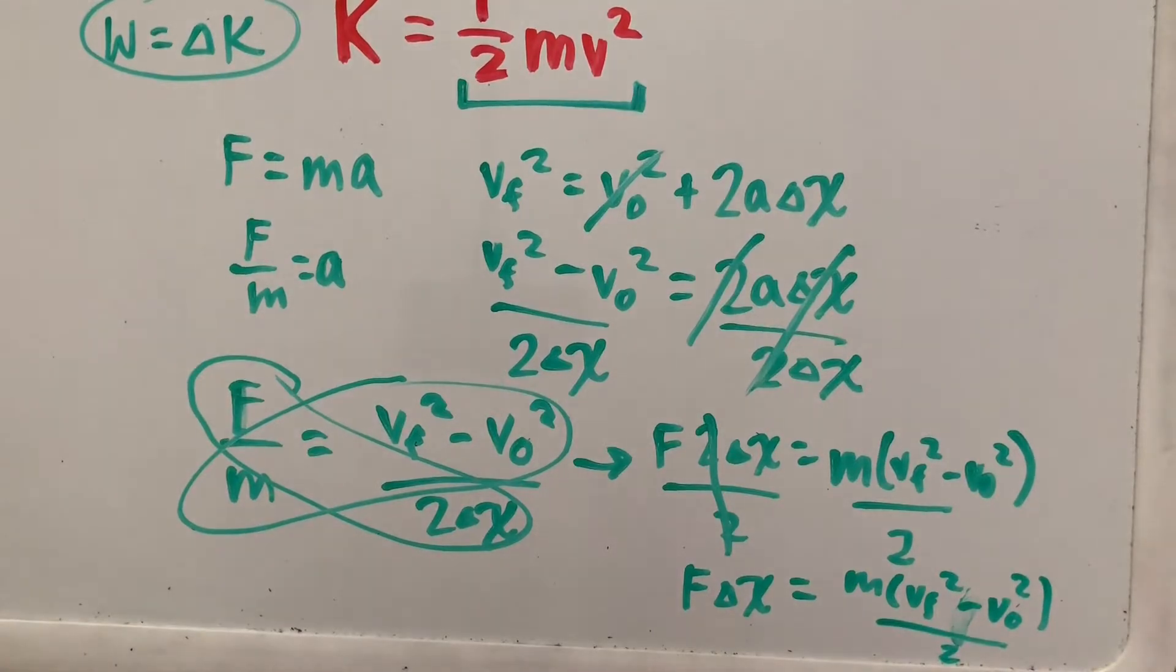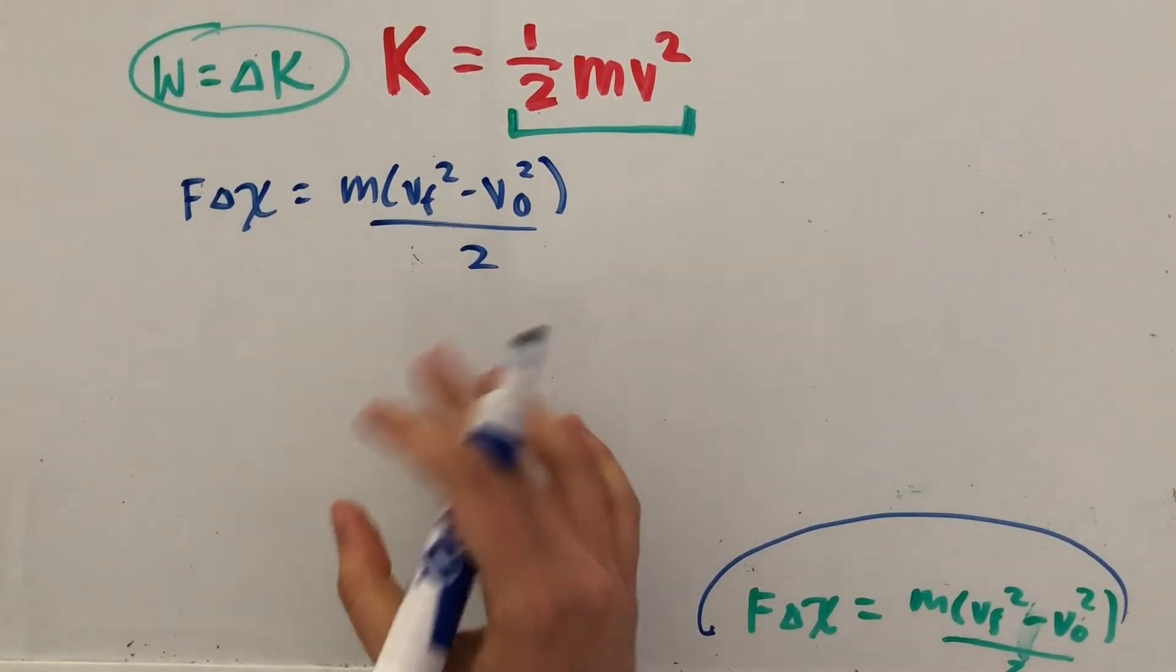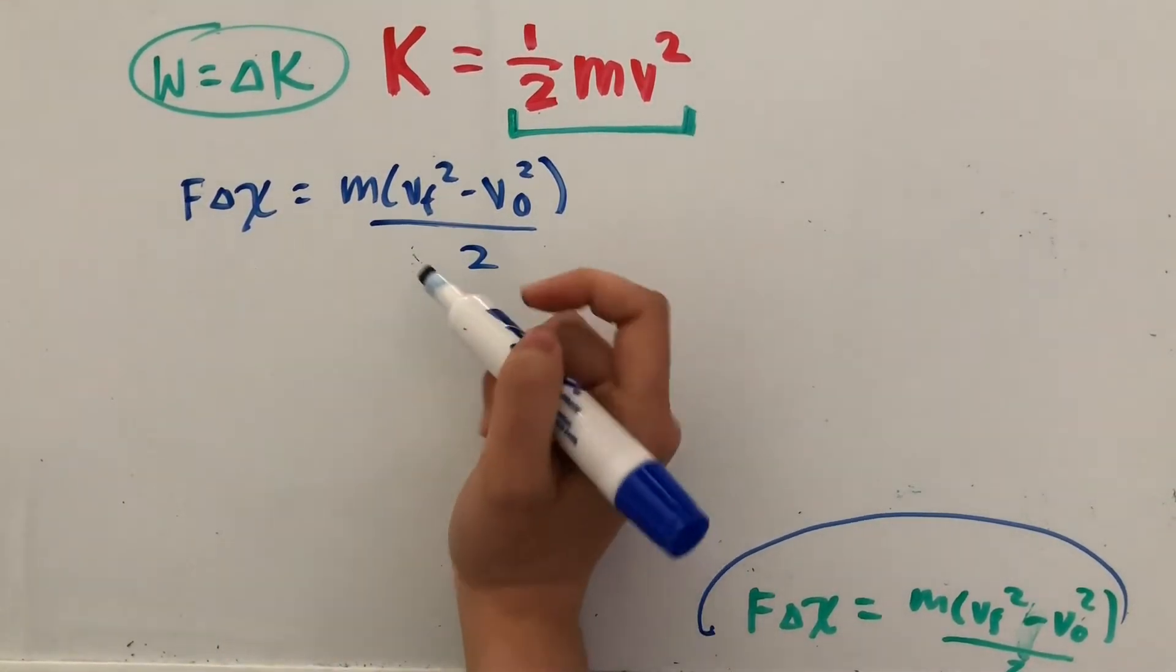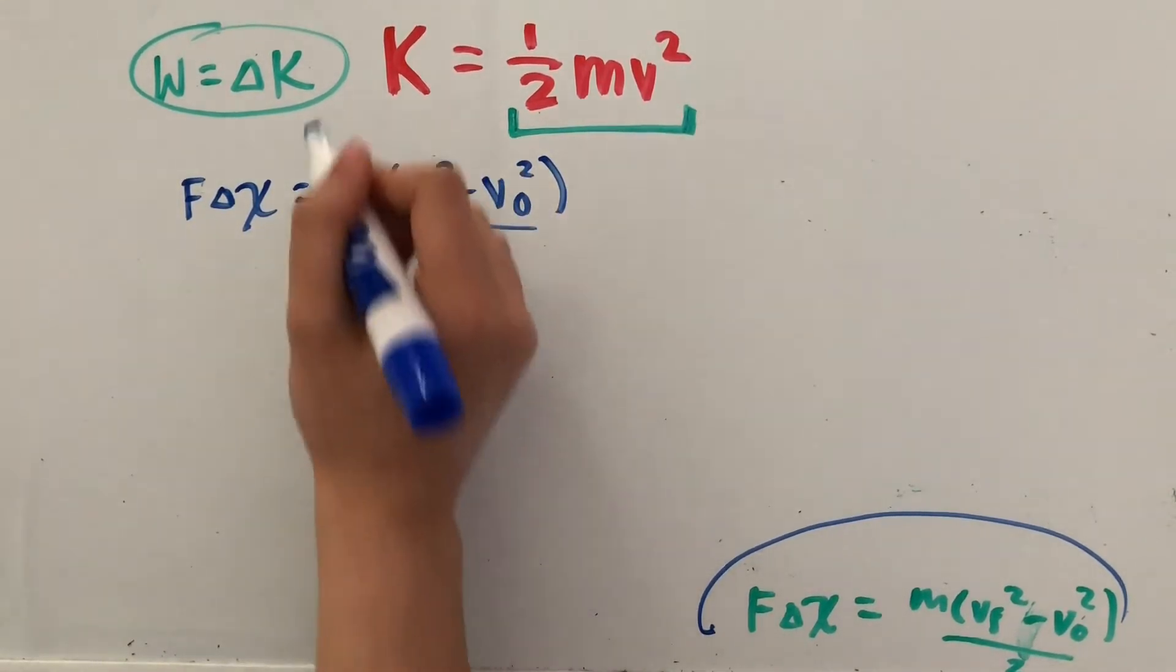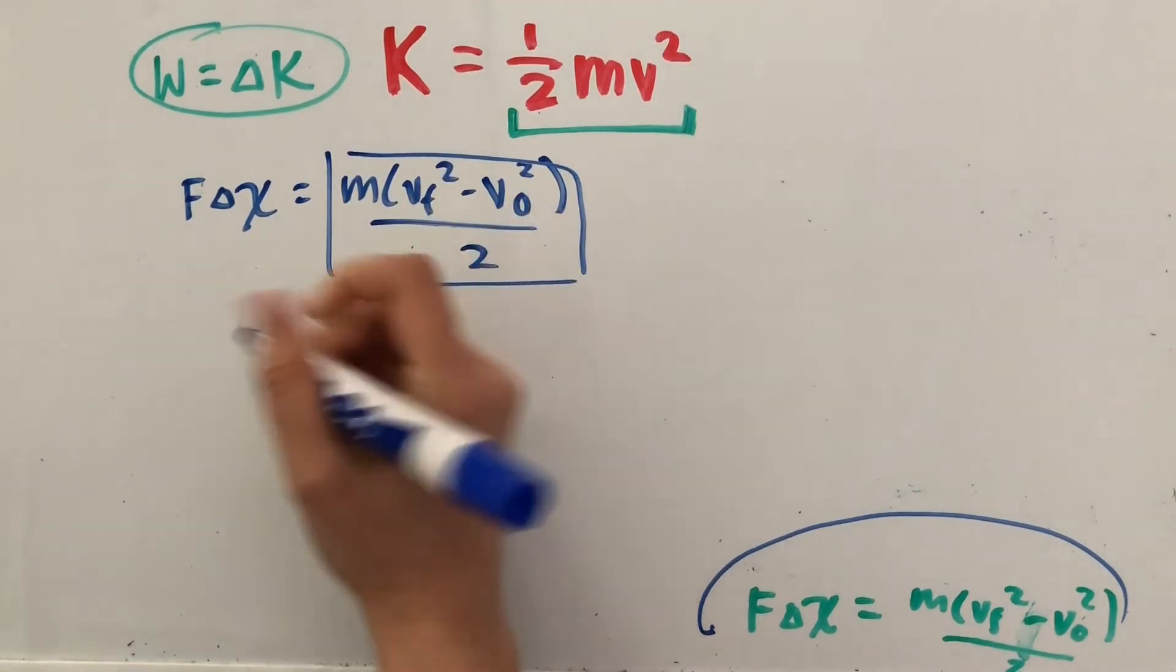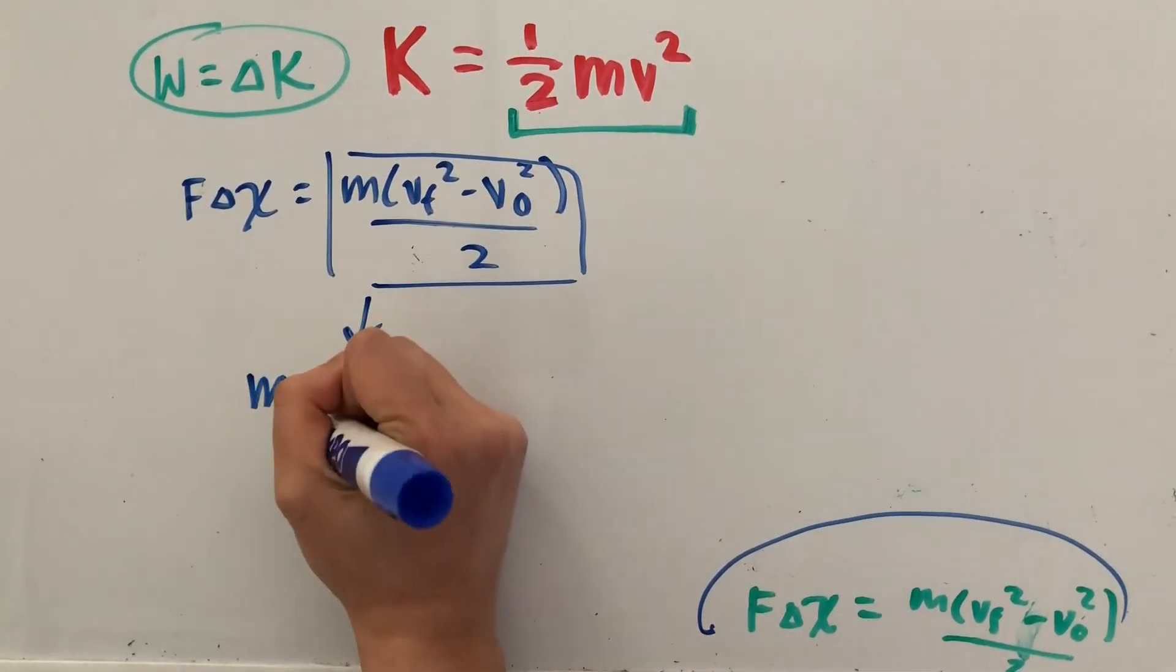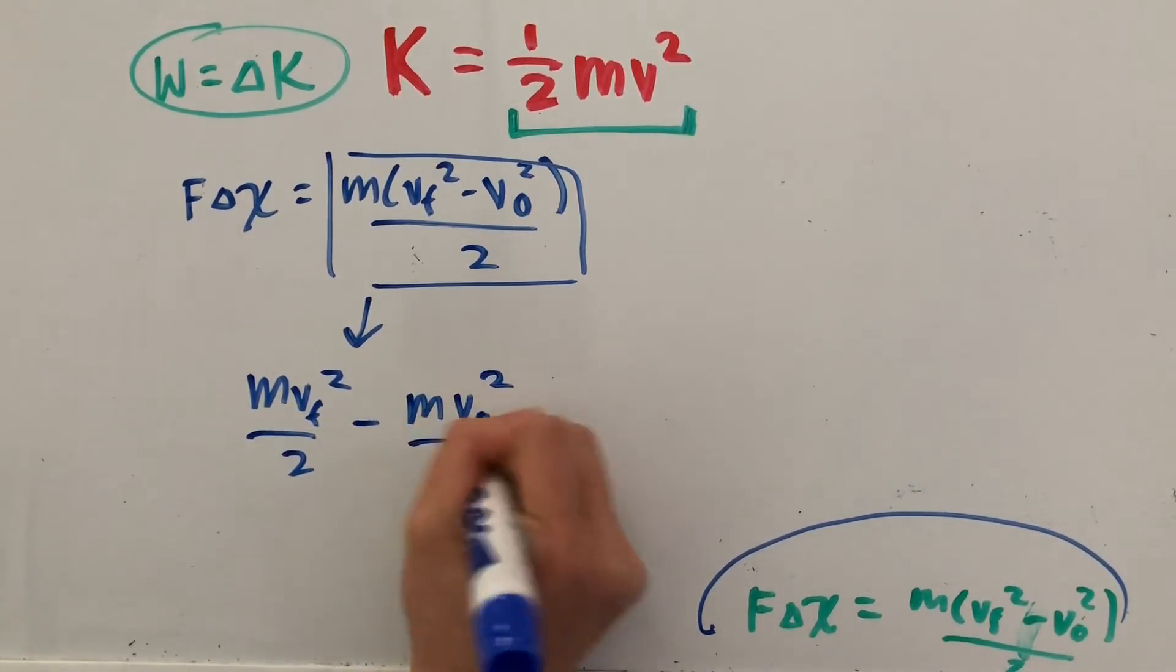All right, let me just clean this up a bit. So this is what we got in our last step previously, and I just rewrote it over here so it can be a little clearer. But what we can do now is distribute this on this side of the equation. So this is really equal to mass times final velocity squared over 2 minus mass times initial velocity squared over 2.